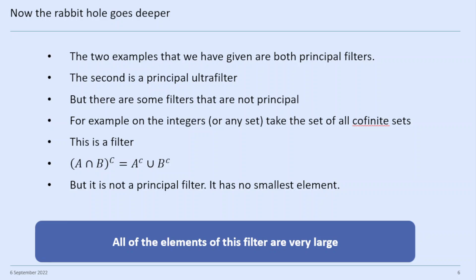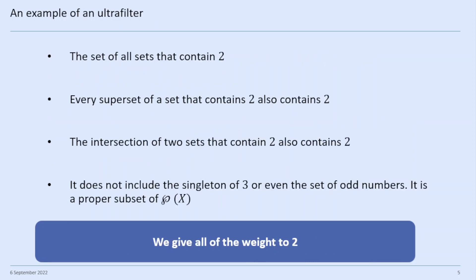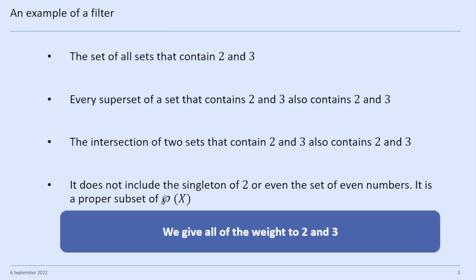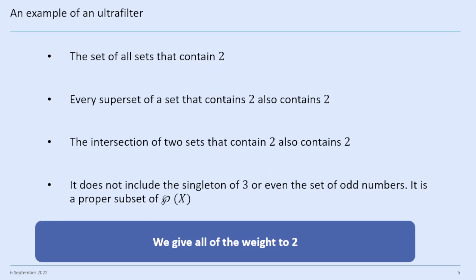But the rabbit hole goes deeper. The two examples we've given are both principal filters. A principal filter has a smallest element — in the first case, the set containing two and three — and the filter is defined as all the sets bigger than that. The second example is a principal ultrafilter, whose smallest element is the set containing two, and it can be defined as the set of all sets bigger than the set that contains two.